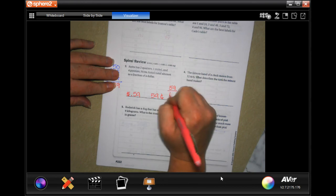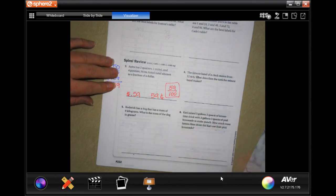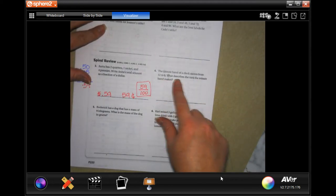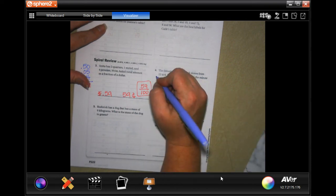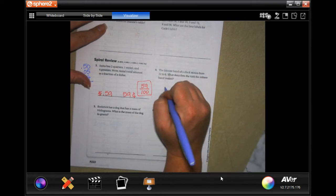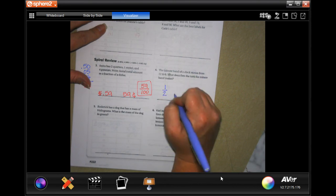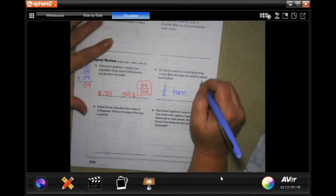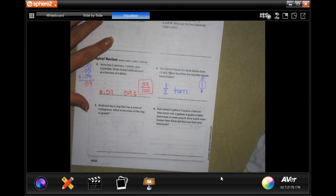The minute hand of the clock moves from 12 to 6. What describes the turn the minute hand makes? It would do a half turn. We don't know if it's going counterclockwise or clockwise, so it's just going to be a half turn. When it's going from 12 to 6, it's going halfway down.